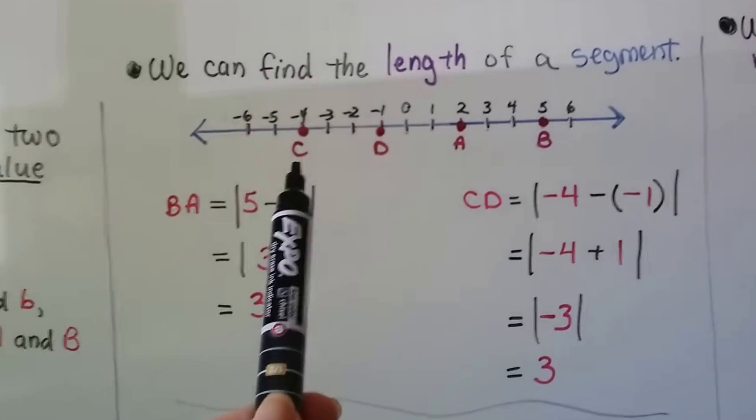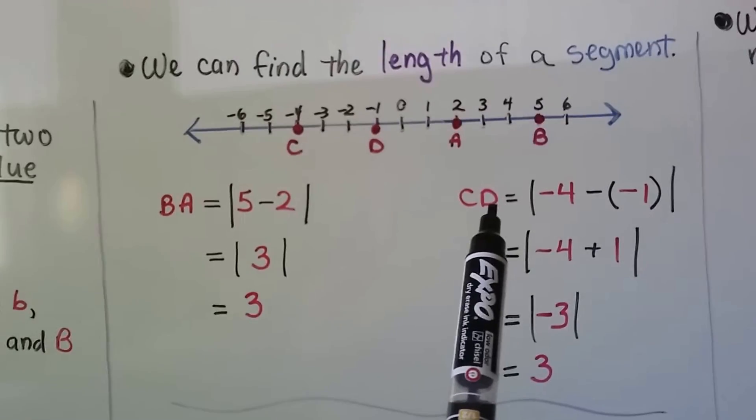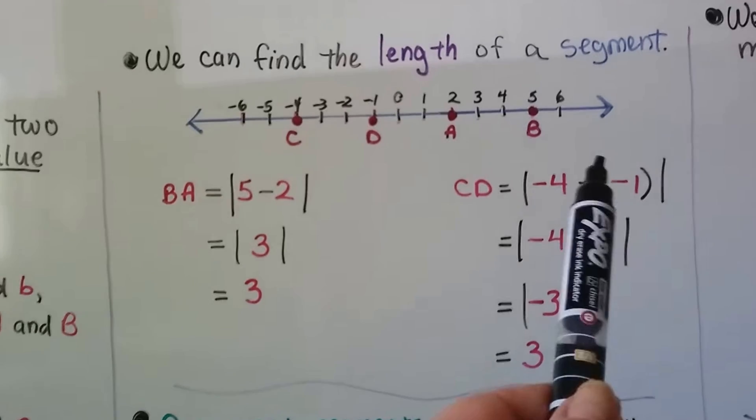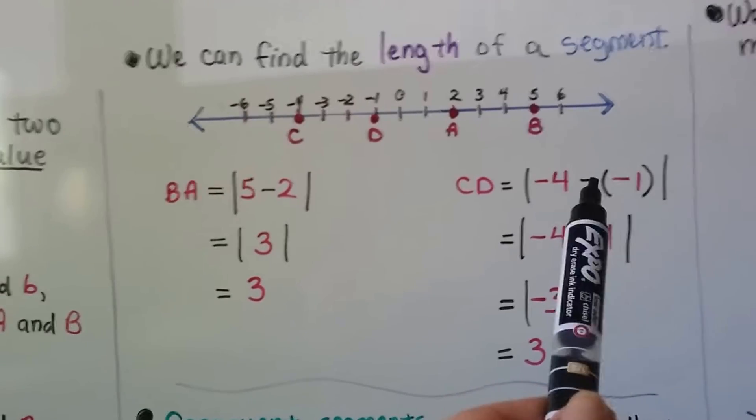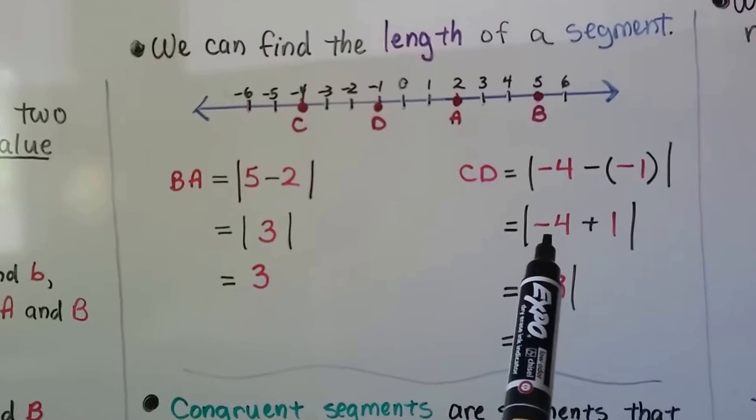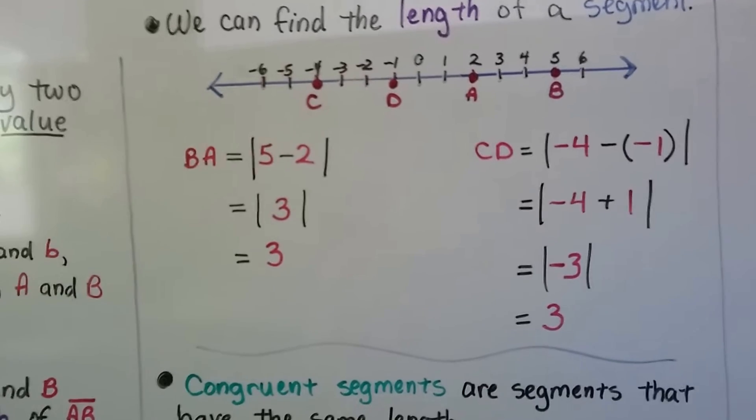We can see that C is negative 4 and D is negative 1. So CD is the absolute value of negative 4 minus a negative 1. We have two negative signs here, so that makes a positive, doesn't it? That means we have the absolute value of negative 4 plus 1, which is the absolute value of negative 3, which is 3.